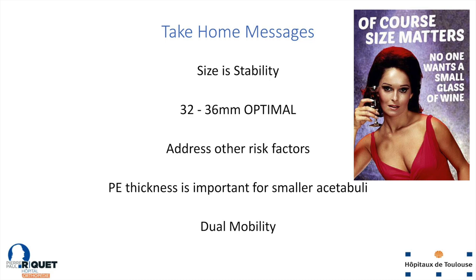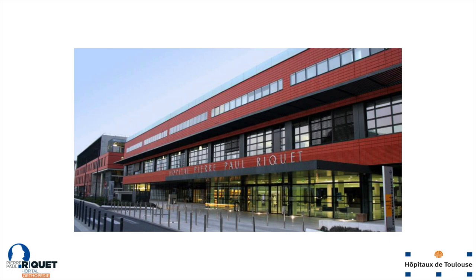To finish, I would say that size is stability, it still matters, and it's very important. We might reach an optimal size between 32 and 36 millimeters head, but you always have to think about other risk factors — the extrinsic risk factors of dislocation. PE thickness is important for smaller acetabuli, and dual mobility might be an option for some patients with high risk of dislocation. Sorry to have been long, and thank you very much.